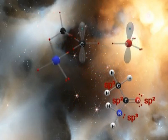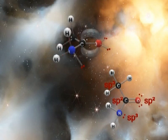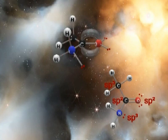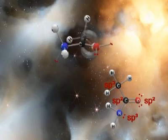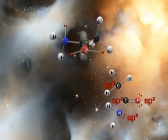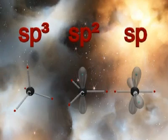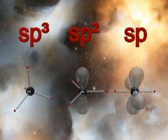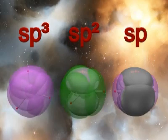Understanding how atoms within molecules are oriented in three dimensions requires an understanding of hybridization theory. Starting with the atomic orbitals, the SP3, SP2, and SP hybrid orbitals are developed and utilized within many supplementary examples.